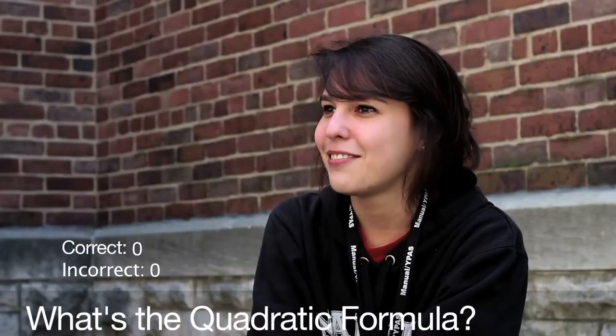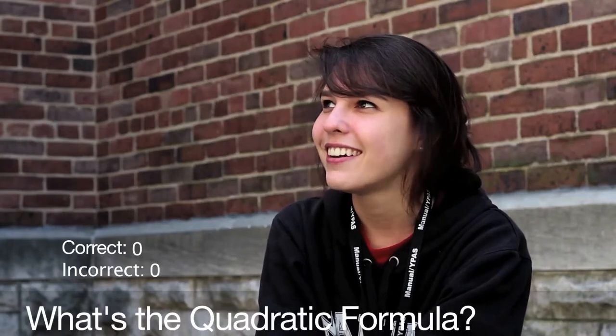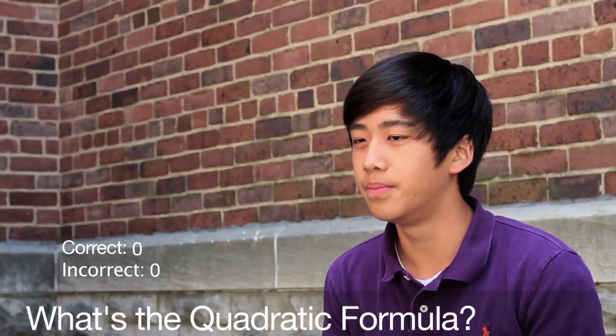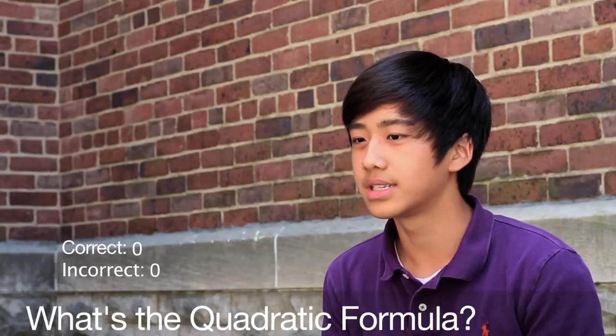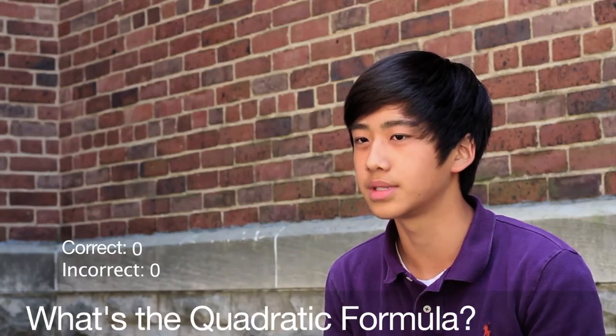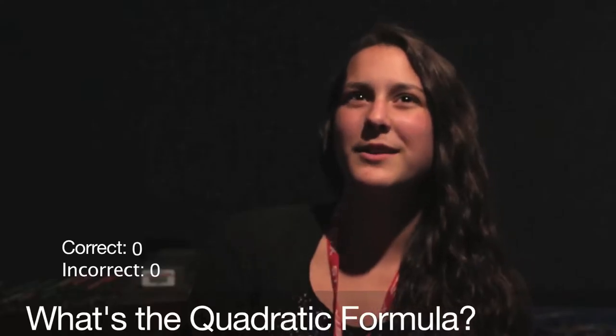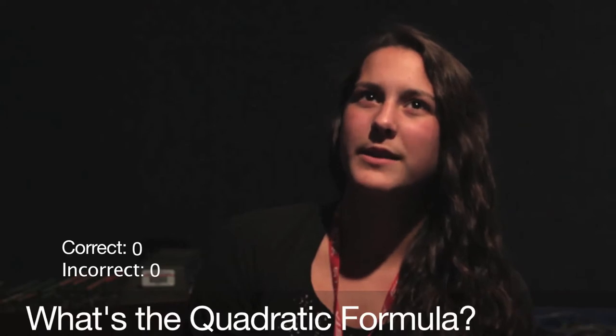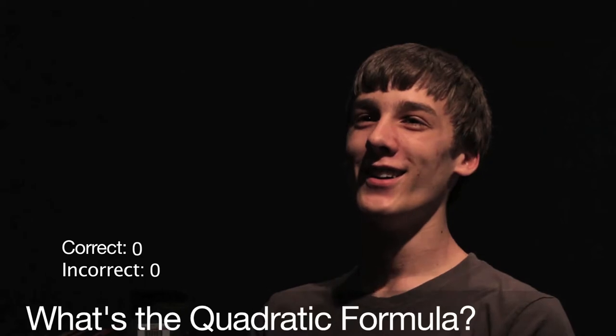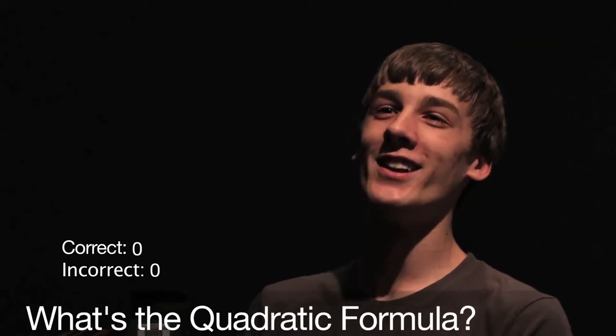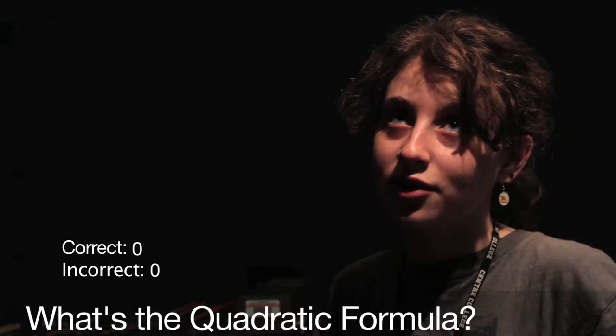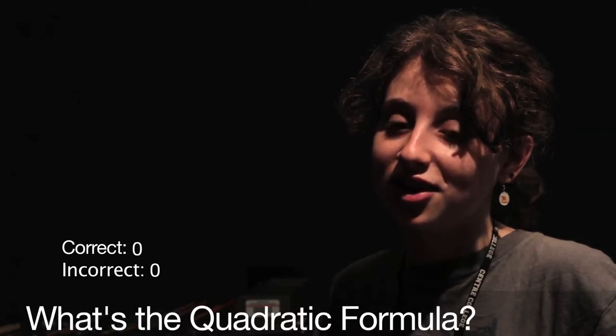X equals negative b plus or minus the square root of b squared minus 4ac all over 2a. The square root of b plus c times 4 over 2 times a. Negative b plus or minus the square root of b squared minus 4ac all over 2a. Plus or minus negative b. I don't know. Good. X equals negative b plus or minus the square root of b squared minus 4ac all over 2a.